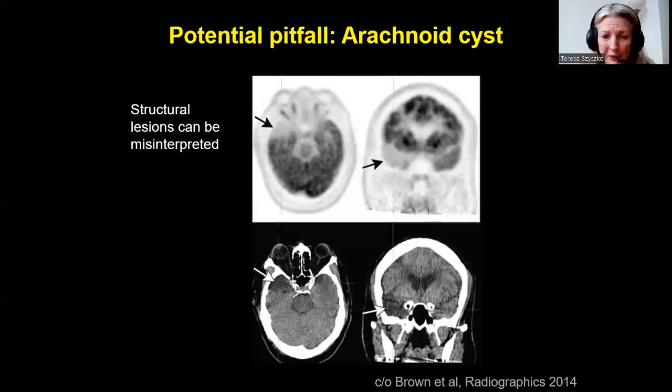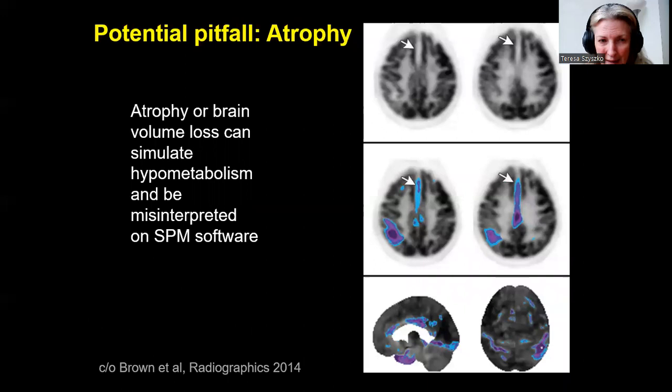A couple of potential pitfalls: if you've got a low-density structure, particularly in the temporal lobes, this could be an arachnoid cyst — not a stroke. Also, cerebral atrophy causes problems with SPM software, where it misinterprets atrophy as hypometabolism, so that's something to be very wary of.